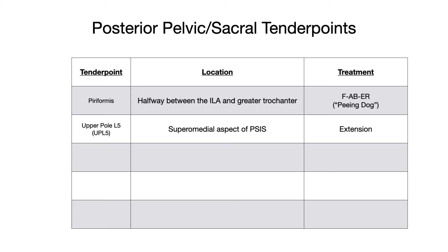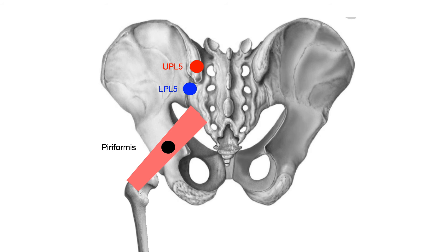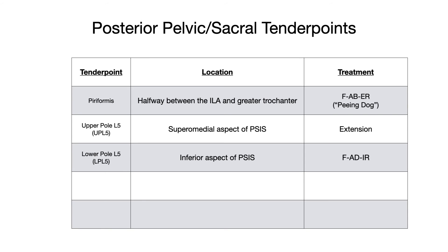Our next tender point, similarly named but not to be confused, is the lower pole L5, also known as LPL5. This is located in somewhat the same region as UPL5, but on the inferior aspect of the PSIS. Treatment position is flexion, adduction, internal rotation. On the diagram, LPL5 is shown in blue — right around the PSIS but on the inferior aspect, whereas UPL5 is on the superior medial aspect of the PSIS. These tender points are close together and named similarly, so do not get confused.